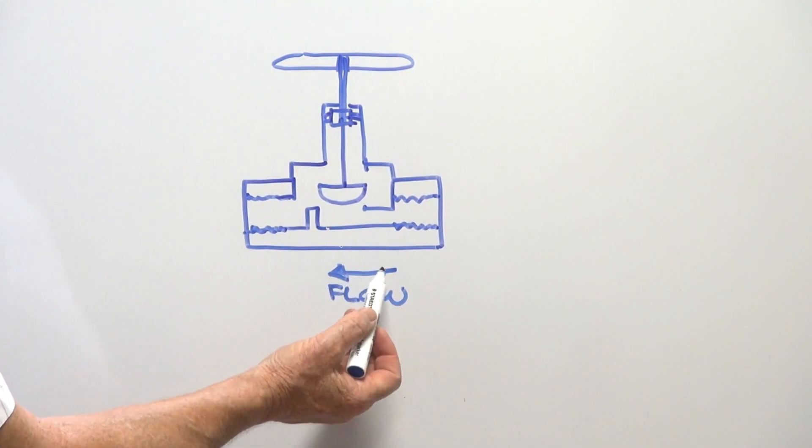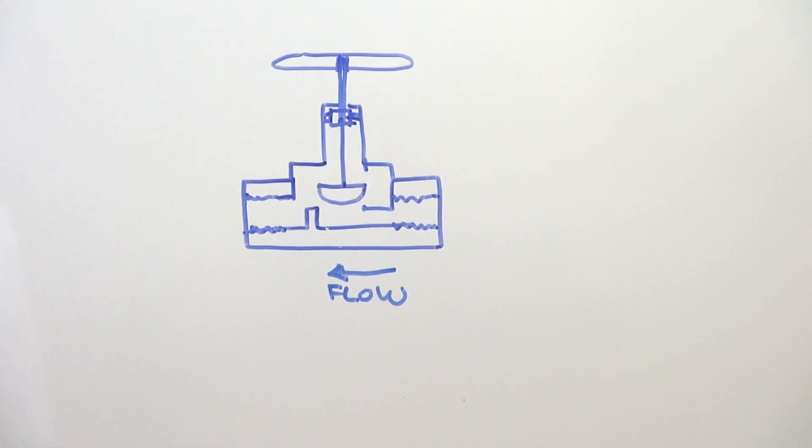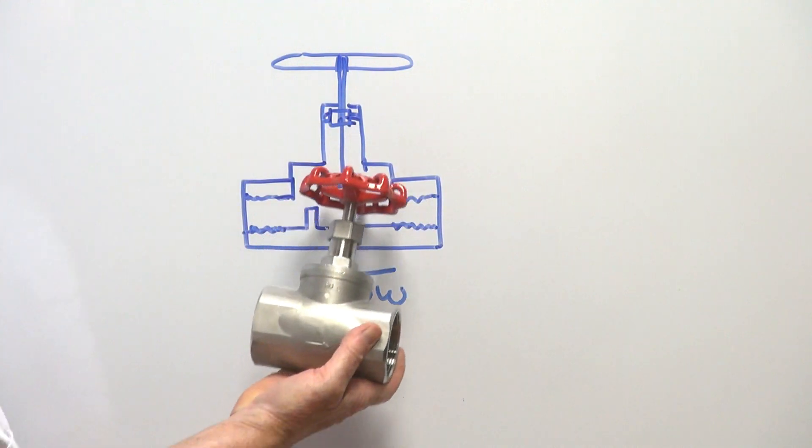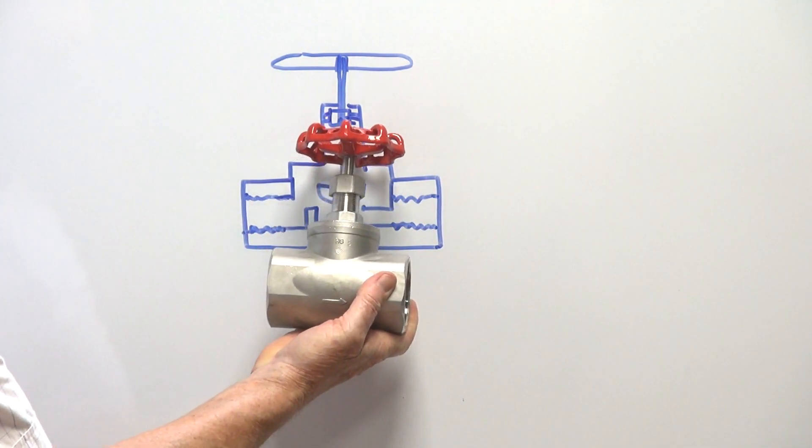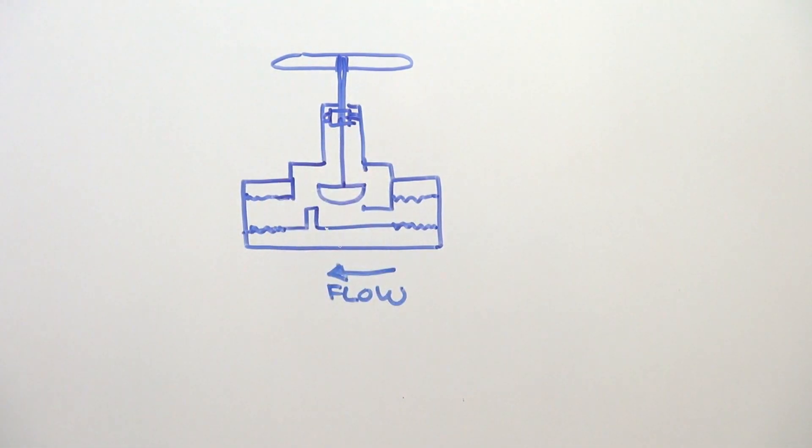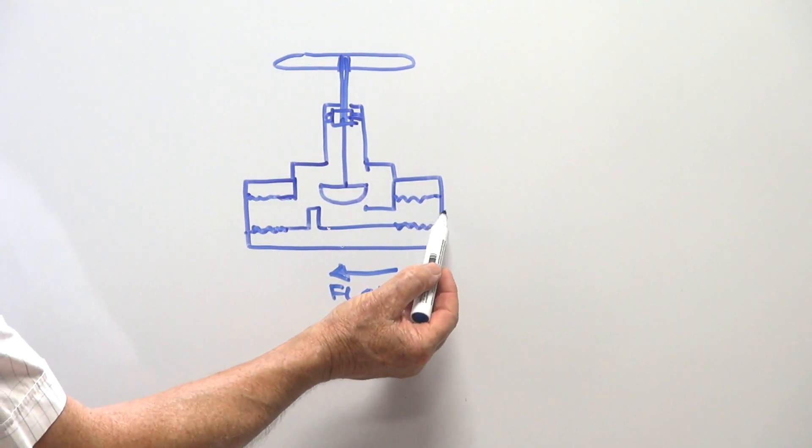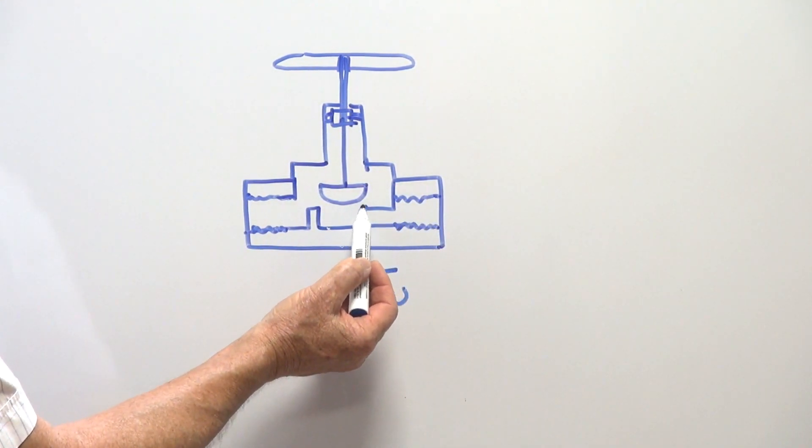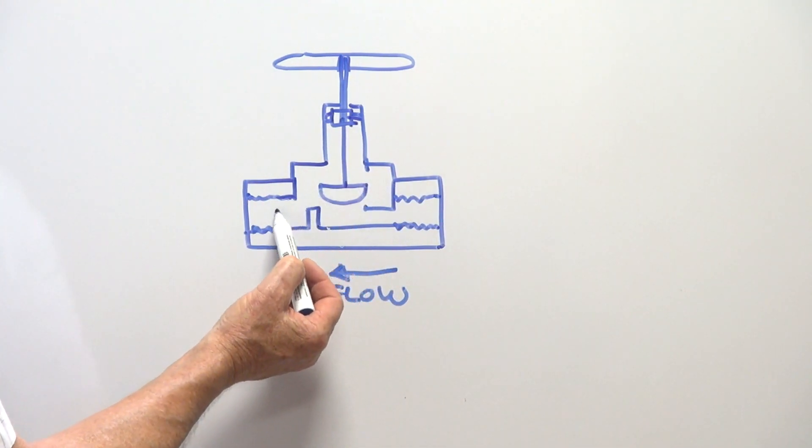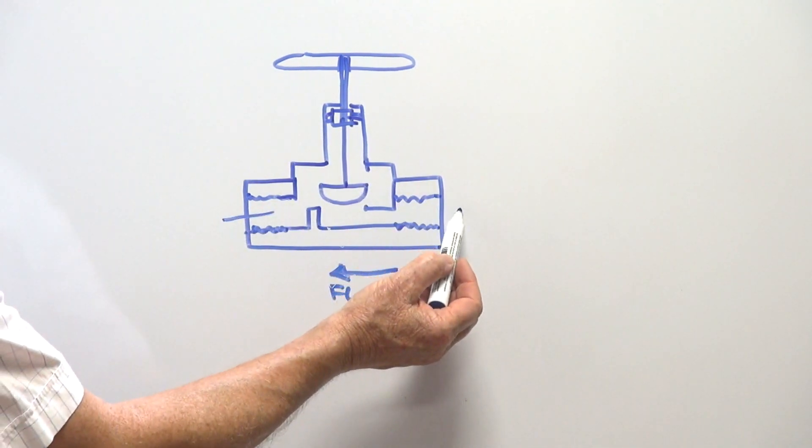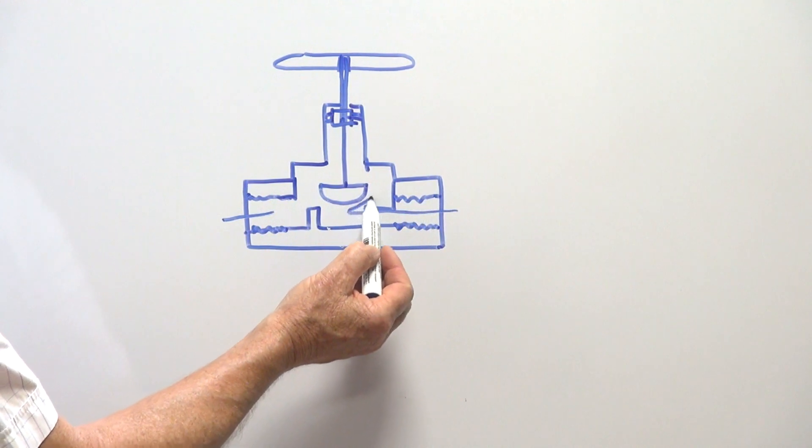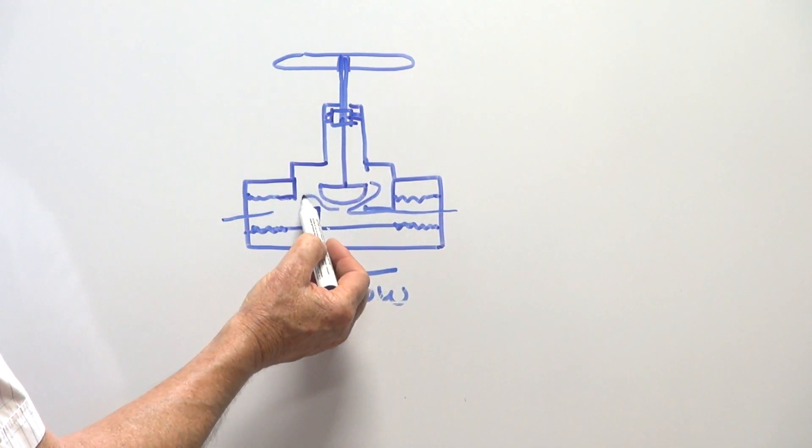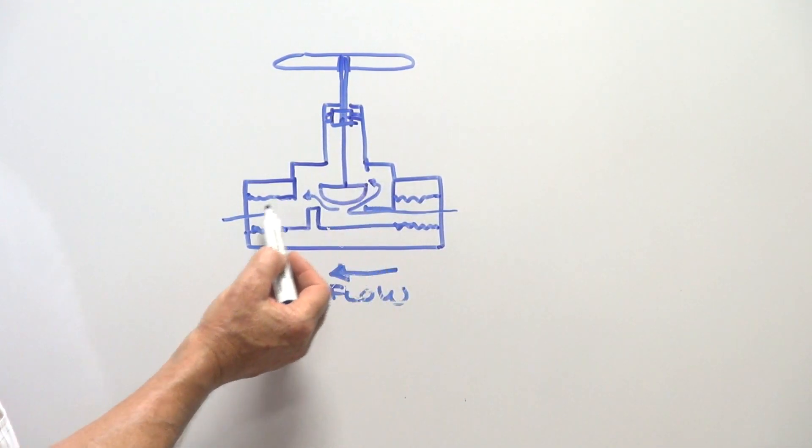So the direction, the body has an arrow on it, showing direction of flow. I think you can see back here on this sketch, just down here on the body itself. In this particular case I've got it going this direction. So the flow comes in here, goes up around the globe and back out this direction. Liquid comes in, goes around like that and out.